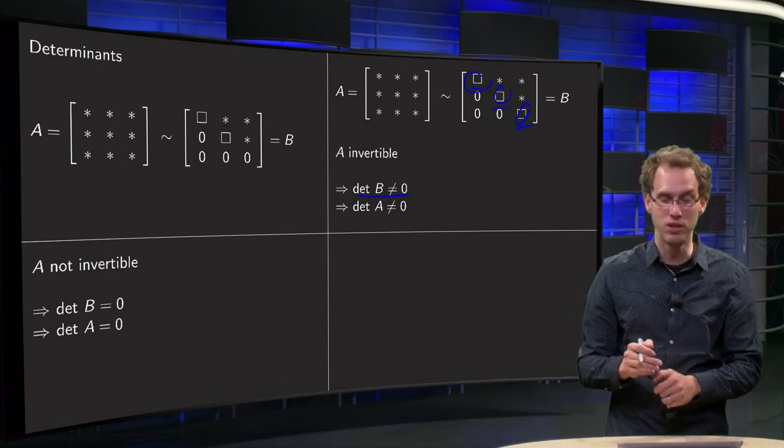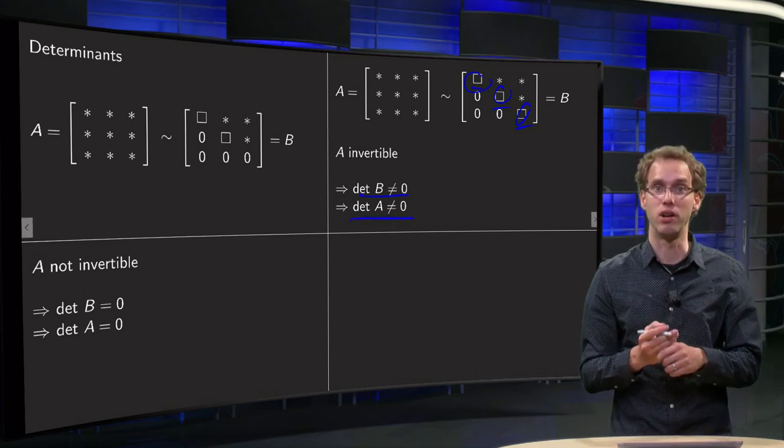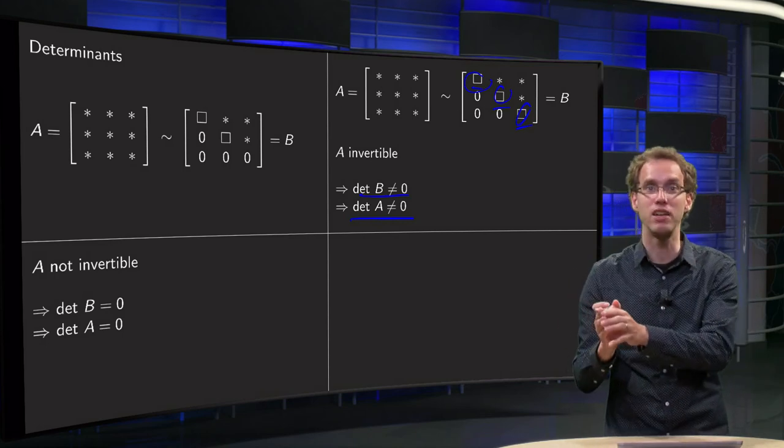So if the determinant of B is not equal to 0, that means the determinant of A is also not equal to 0. So if A is invertible, that means the determinant of A is not equal to 0.